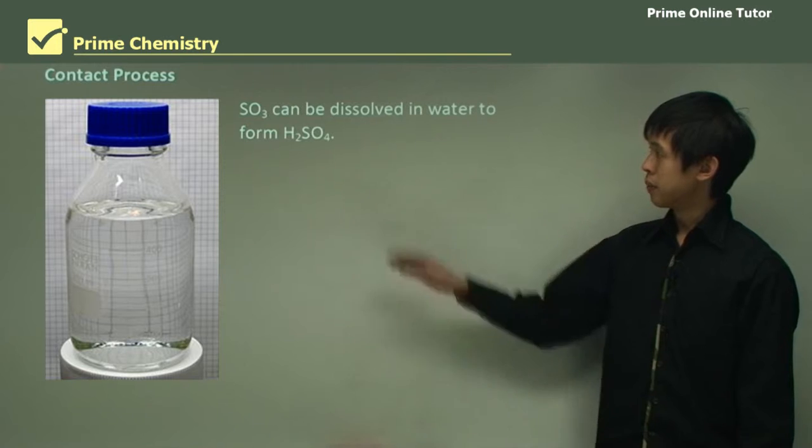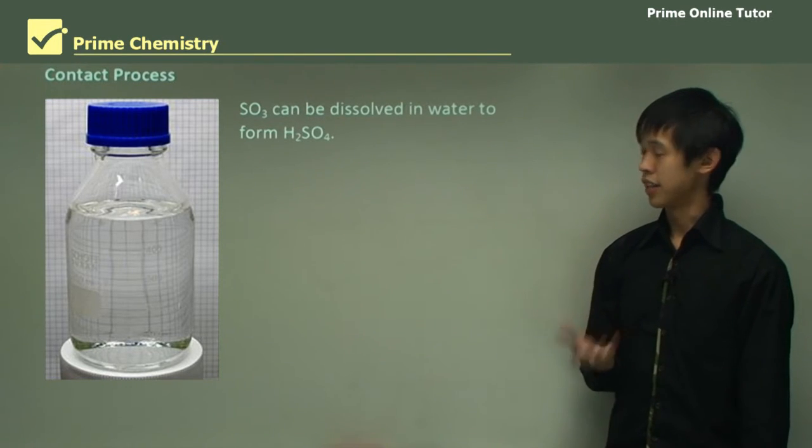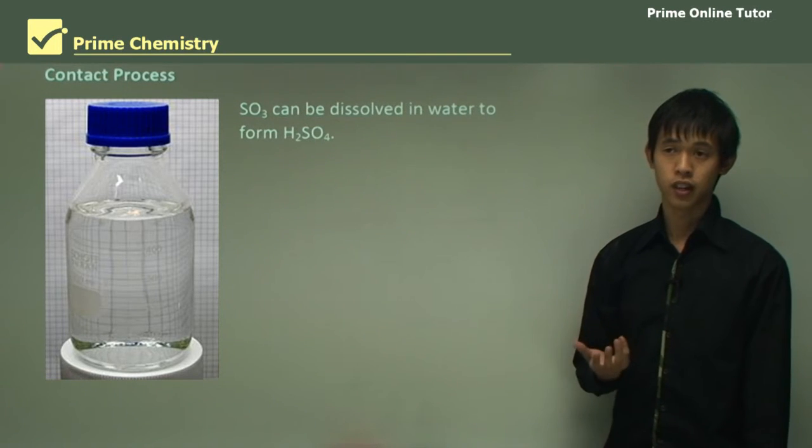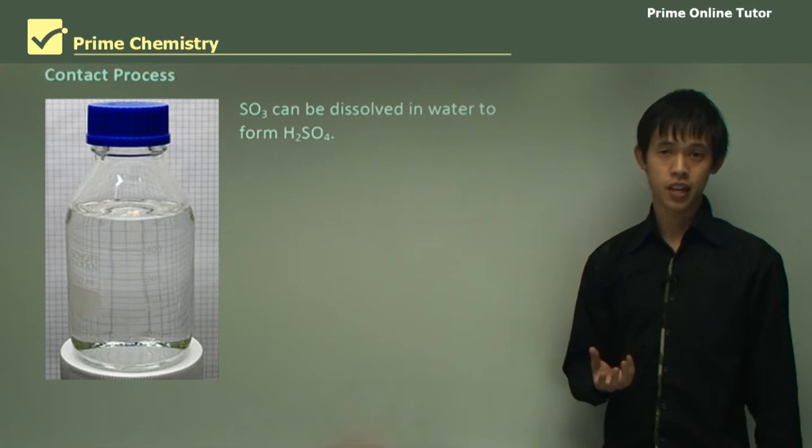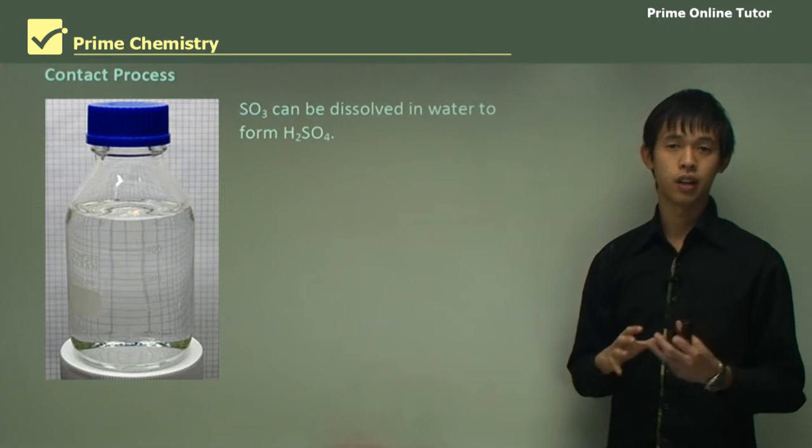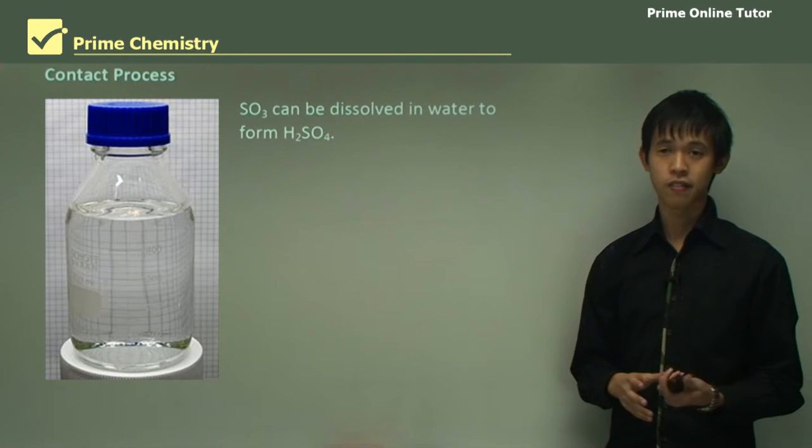That SO3 can actually be dissolved in water to form H2SO4, and often that is the way we produce pure sulfuric acid. But there are some limitations in that it can form a mist when it reacts with water, creating a mist of sulfuric acid which is a safety concern.